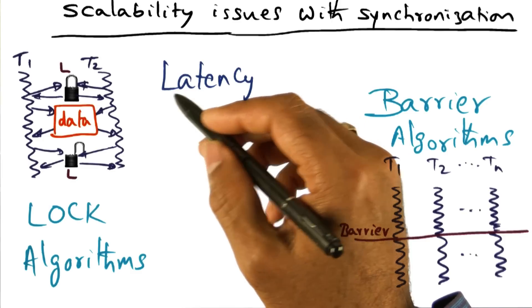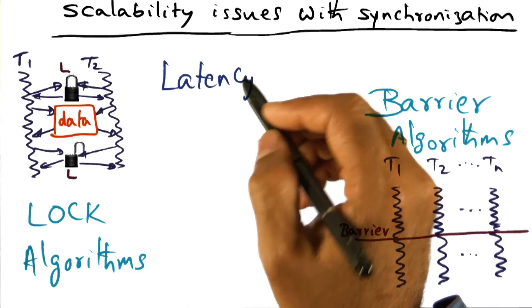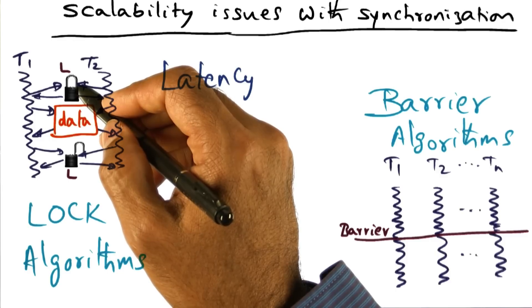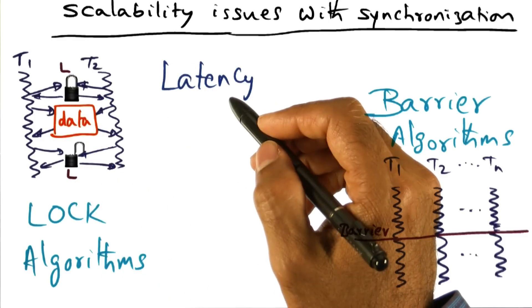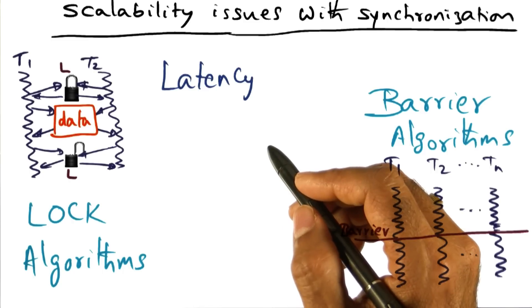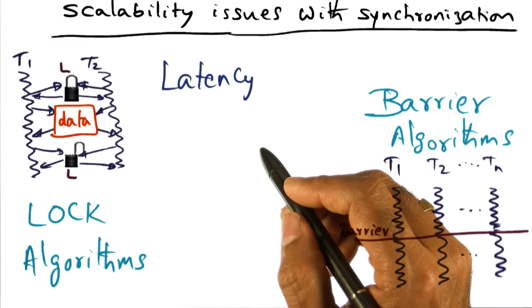Or to be more precise, latency is asking: if the lock is currently not being used, how long does it take for me to go and get it? That's really the key question that latency is trying to look at.